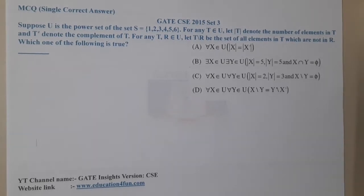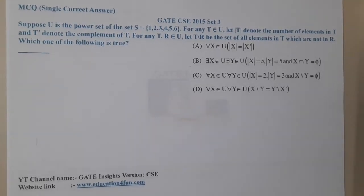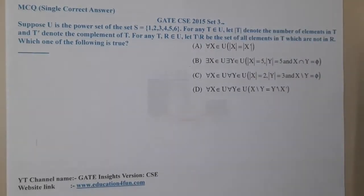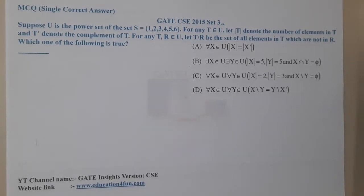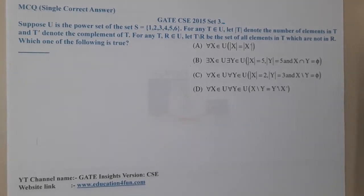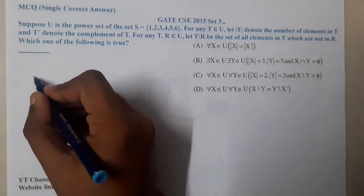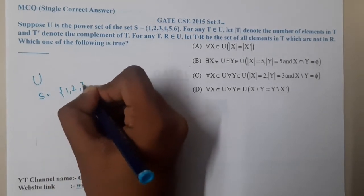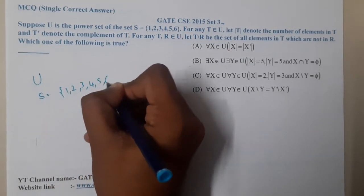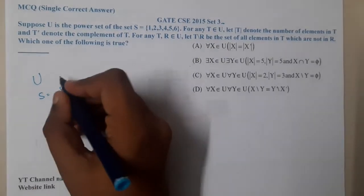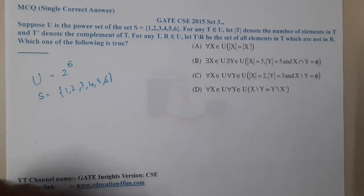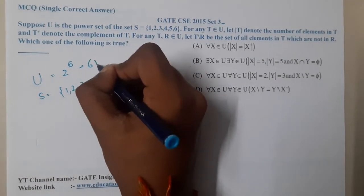Hello guys, we are back with our next lecture. This question belongs to GATE CSC 2015. The question states: suppose U is the power set of S, where S = {1, 2, 3, 4, 5, 6}. There are 6 elements in S, so the power set U will have 2^6 = 64 elements.